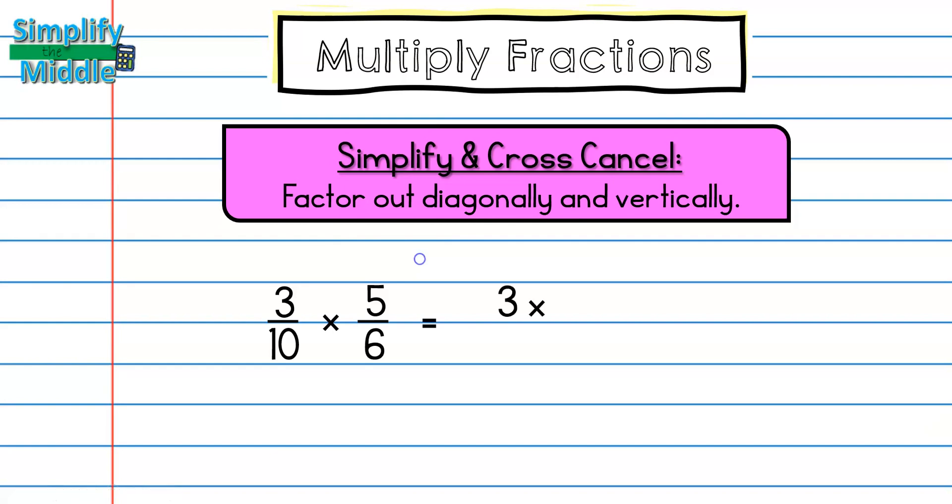So if I was to do that, I have 3 times 5 because I multiply my numerators over 10 times 6 multiplying my denominators. I end up with 15 for my numerator and 60 for my denominator. It's quite difficult in order for me to find out what the greatest common factor is here because I don't know my times tables through 15.